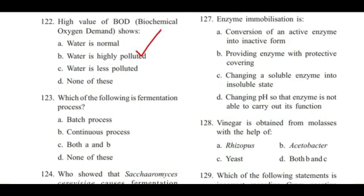Question 123: Which of the following is a fermentation process? — Batch process, continuous process, both A and B, or none of these? Answer is C, both A and B.